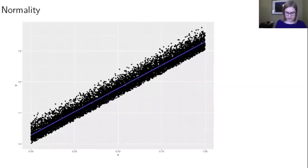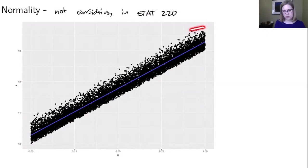The normality condition we're not considering in this class. But it has to do with the residuals being normally distributed. And in this case, the residuals are not normally distributed. There are fewer residuals up in the top and more dense residuals down in the bottom.